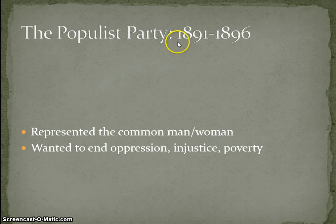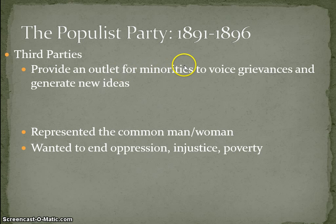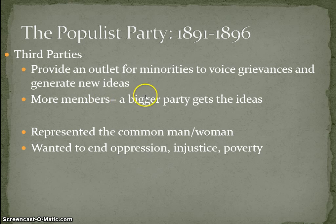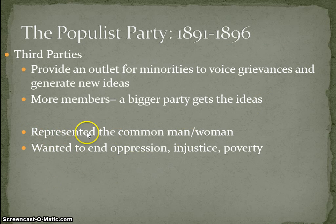The Populist Party existed from 1891 to 1896 — about five years — and it was a third party. Third parties provide an outlet for minorities to voice grievances, meaning complaints, and they generate new ideas. More members equals a bigger party, and the bigger party gets the ideas picked up by the two main parties. The Populist Party represented the common man or woman and wanted to end oppression, injustice, and poverty.